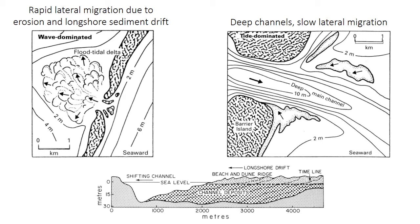Tidal inlets in barrier islands migrate laterally, primarily due to longshore sediment supply. Because sediment is supplied by longshore drift on one side, the inlet tends to erode on the other side and migrate in that direction. In wave-dominated, more microtidal barriers, the inlet is shallow and tends to migrate quite rapidly. In tide-dominated, mesotidal barrier islands, the inlets are deep and migrate much more slowly. Regardless of migration rate, both produce lateral accretion-like surfaces somewhat analogous to meandering point bars, with the geometry depending on the balance between aggradation and lateral migration.